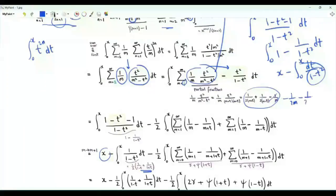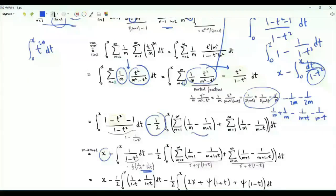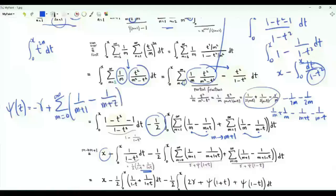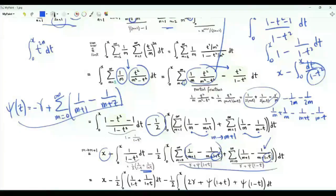Minus 1/m can be written as minus 1/(2m) minus 1/(2m), taking minus 1/2 as a common factor. We then have [1/m minus 1/(m+t)] plus [1/m minus 1/(m minus t)]. Changing the summation index m to m+1, the sum starts from 0. Recalling that the digamma function ψ(z), the logarithmic derivative of the gamma function, has the series representation minus γ (Euler-Mascheroni constant) plus summation m from 0 to infinity of [1/(m+1) minus 1/(m+z)], this summation becomes γ + ψ(1+t) and the other becomes γ + ψ(1 minus t). The integrand is 2γ + ψ(1+t) + ψ(1 minus t).